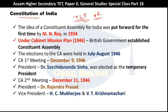The idea of the Constituent Assembly — the Constituent Assembly election — was conducted under the Cabinet Mission Plan, which was in 1946. Under the Cabinet Mission Plan, the British government established the Constituent Assembly. The Constituent Assembly election was held mainly in July–August 1946.